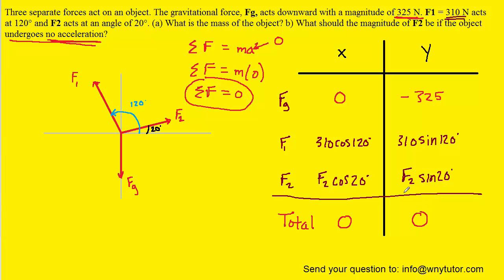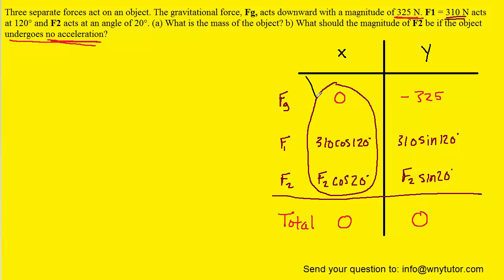Now to actually solve for F2, what we can do is consider the three forces in the x direction. Remember that all three of these forces are going to have a total value of zero. And so what that means is that when you add those three x direction forces together, you should be able to set that equal to zero.